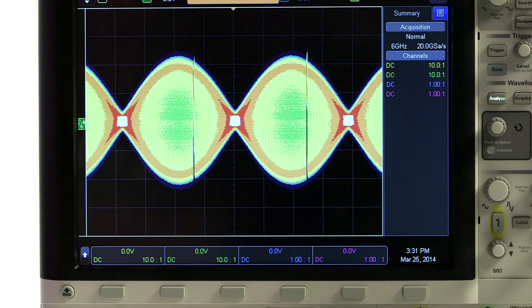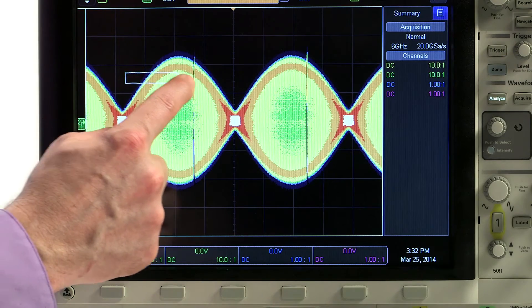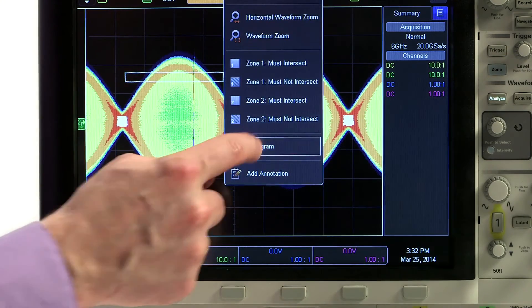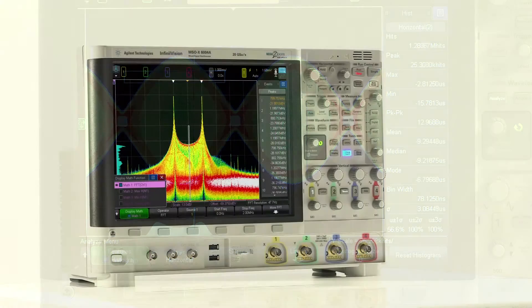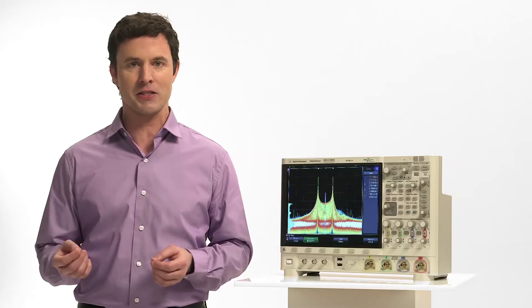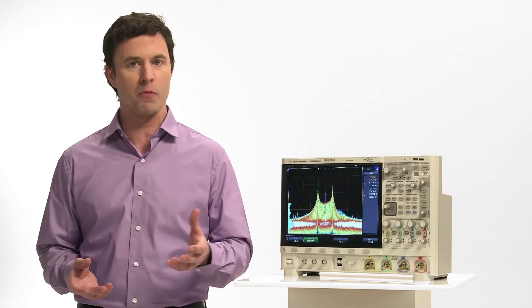In addition, you can visualize the distribution using color grade and histograms. For the first time in an embedded OS scope, the 6000x series can color grade and histogram analog channel waveforms or math functions.